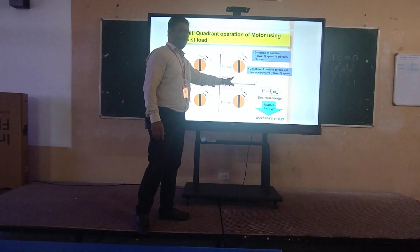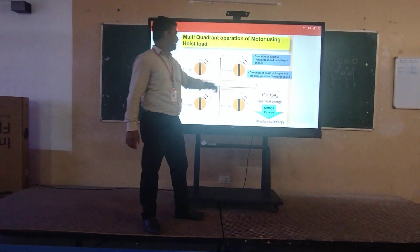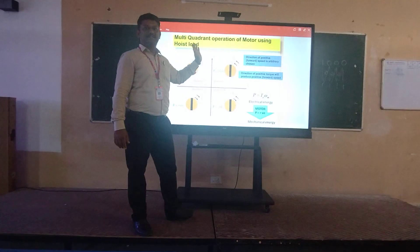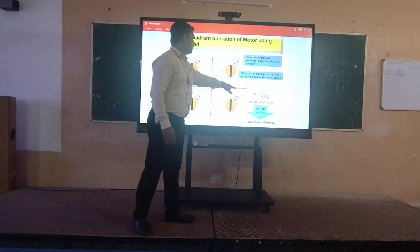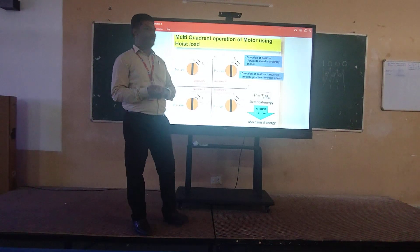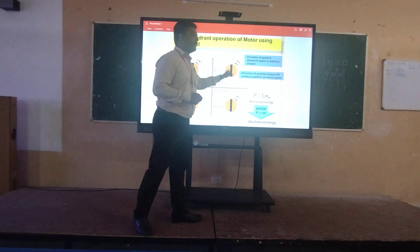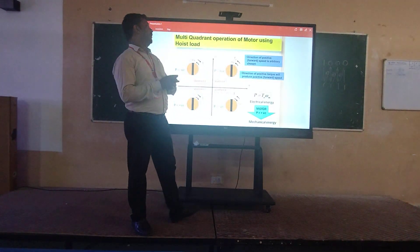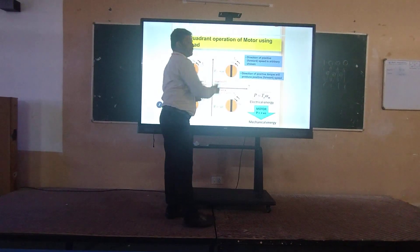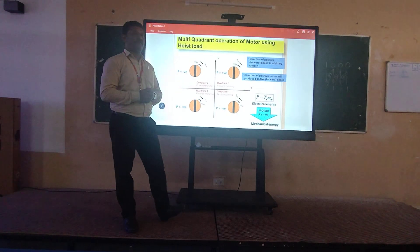The first one is the forward motoring operation. In this forward motoring operation, that is the torque (tau) and omega — omega is the speed. Both tau and omega components are in the same direction. In this mode of operation, the torque component and the motor speed are in the same direction.